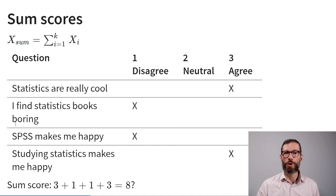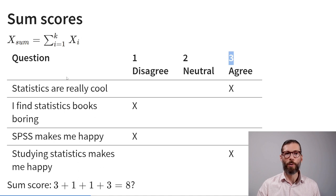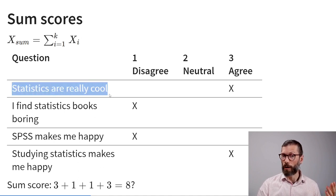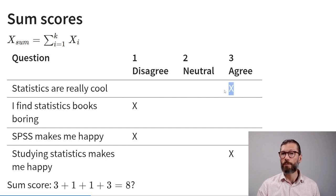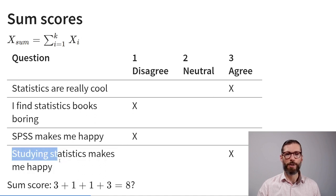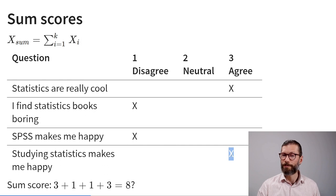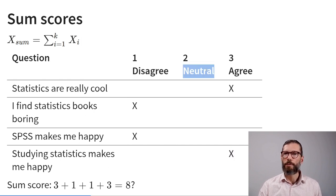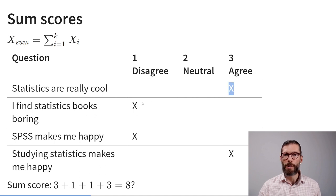Say we have a four-question questionnaire to measure whether people like statistics. The first question — 'statistics are really cool' — this person responded 'agree.' The second — 'I find statistics books boring' — they disagreed. The third — 'SPSS makes me happy' — they disagreed. The fourth — 'studying statistics makes me happy' — they agreed. Treating three response categories as 1, 2, and 3, we calculate a sum score: 3 + 1 + 1 + 3 = 8.